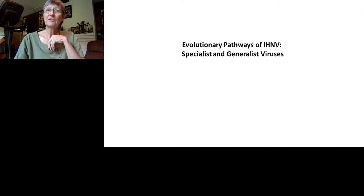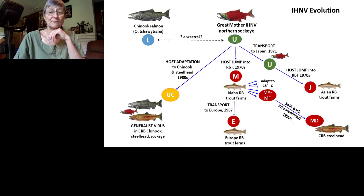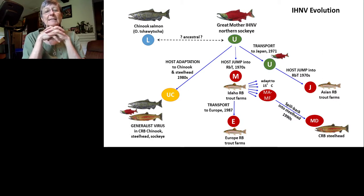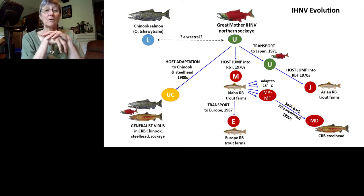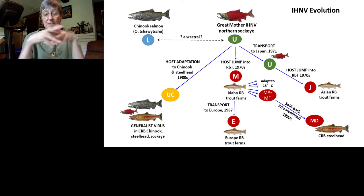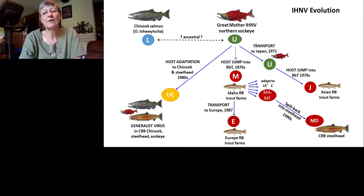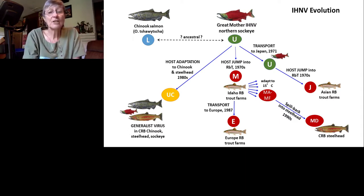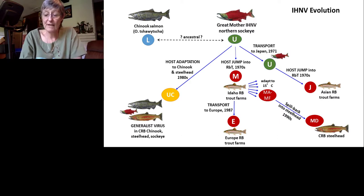Our overarching theory is that the ancestral 'great mother' IHN was in the northern part of North America in sockeye — similar to the U viruses we see today. L viruses in Chinook are also very old and full-genome phylogenies cannot distinguish which is ancestral. We know the U virus from sockeye was the ancestor that host-jumped into rainbow trout in the 1970s and, after establishing in the rainbow trout industry, diverged into the M genogroup with much greater genetic diversity than in sockeye natural populations.